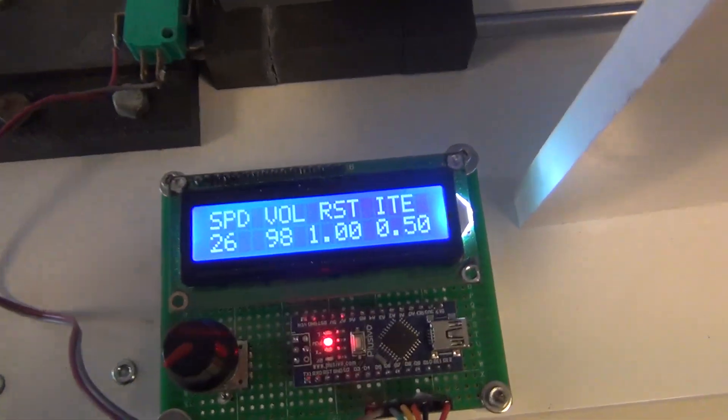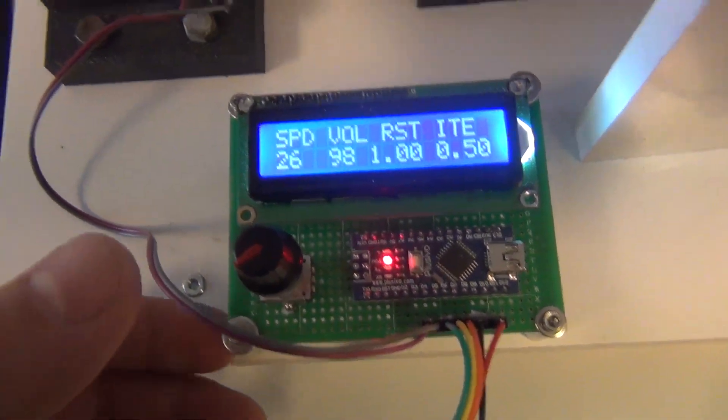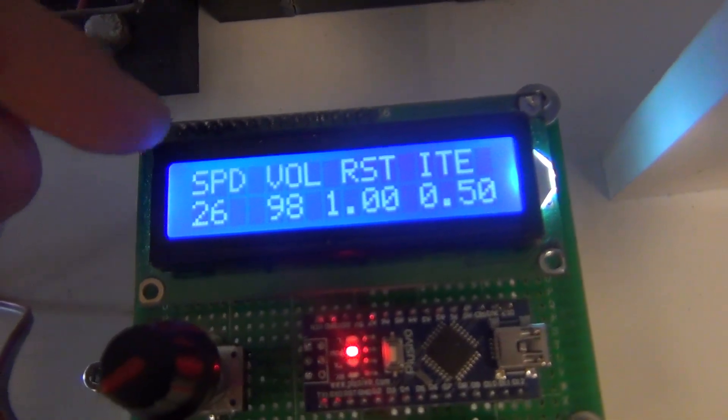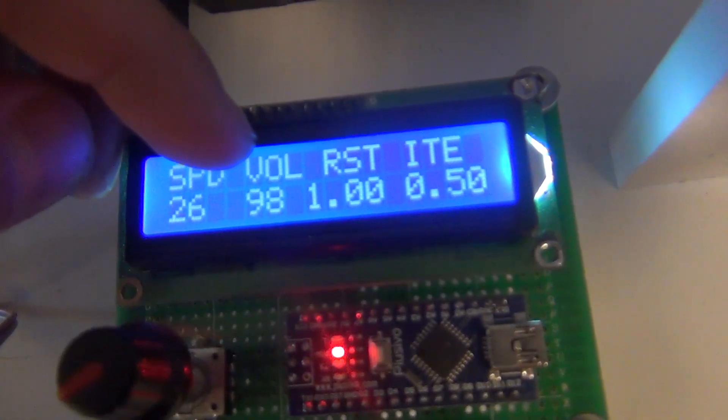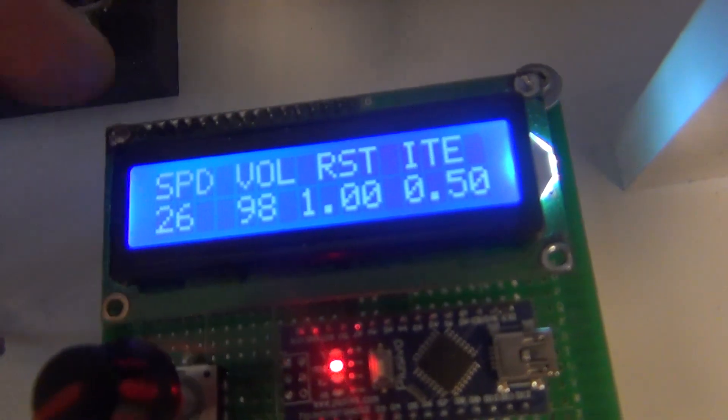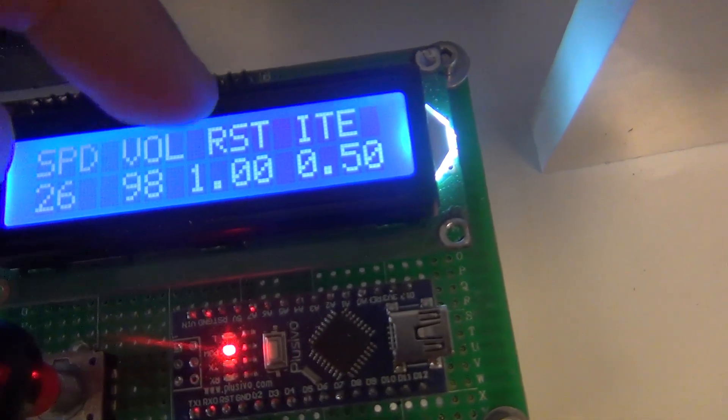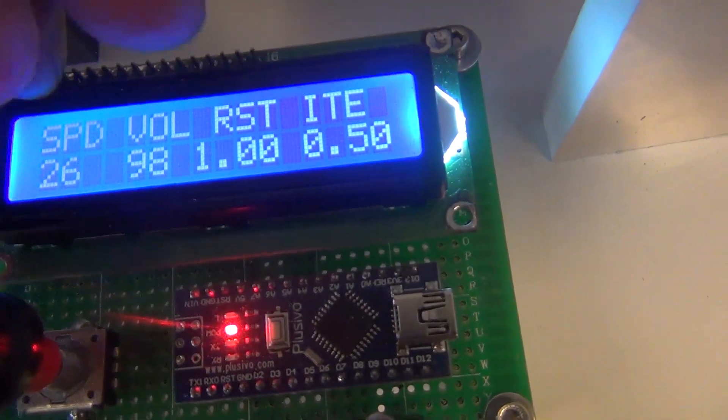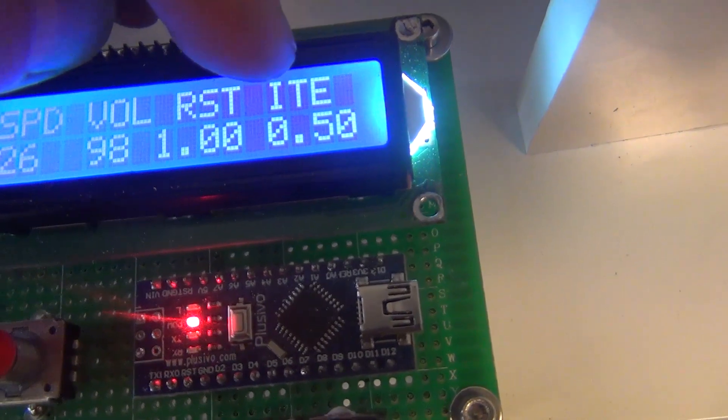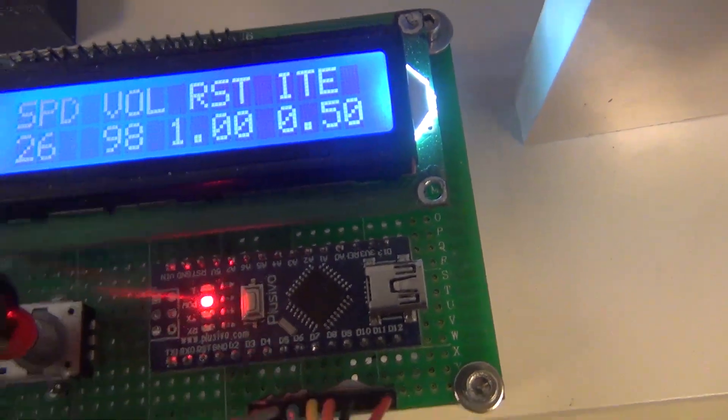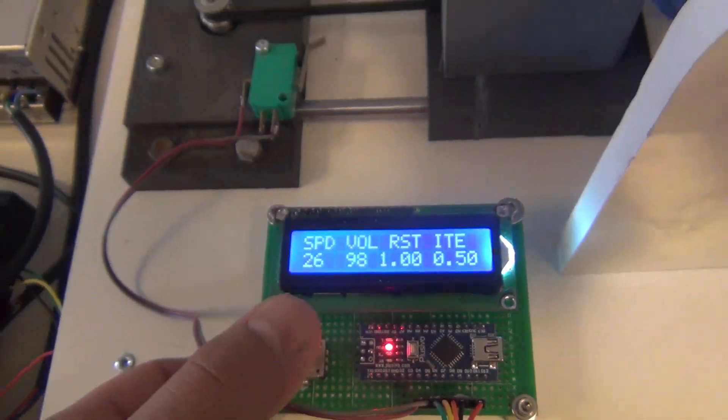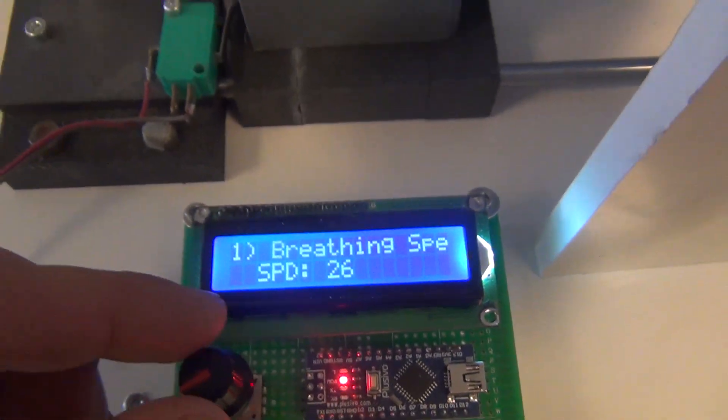So let's go into the software a bit and see what we have here. We have the breathing speed here. We have the volume of air and it's in percentage of the movement. You have the rest period between respiration, so it's one second at the moment, and the interval to wait for the exhale.